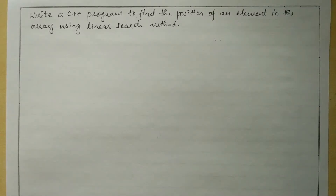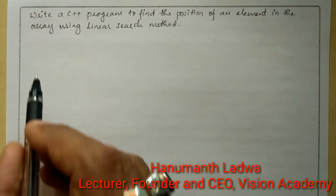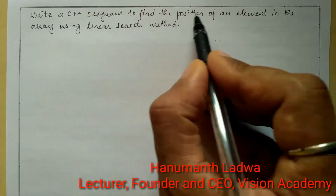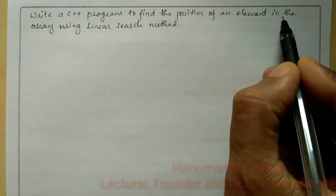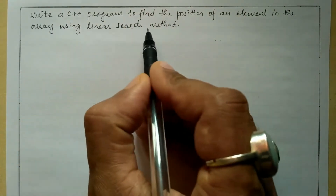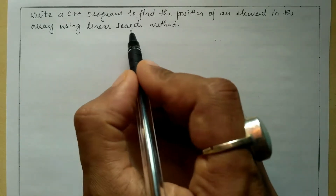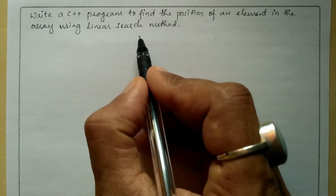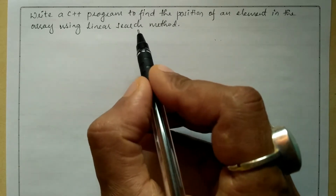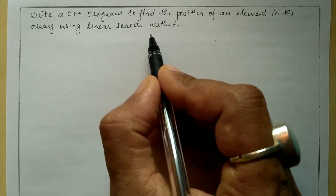Hello and welcome to Vision Academy. My name is Hanman Ladwa and in this video we are going to write a C++ program to find the position of an element in the array using linear search method. Linear search method means we are going to sequentially look forward for the element that is to be searched.